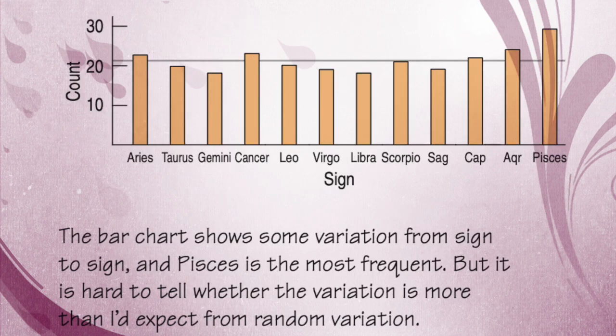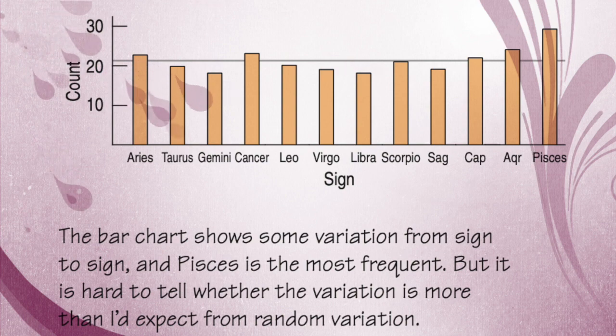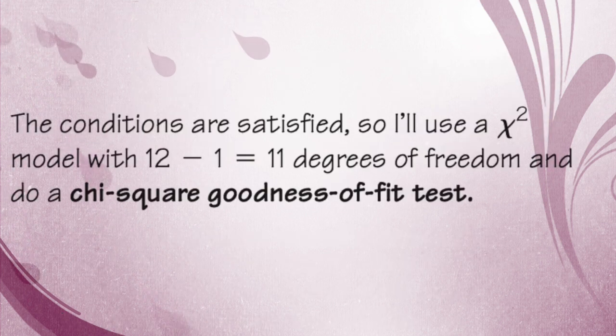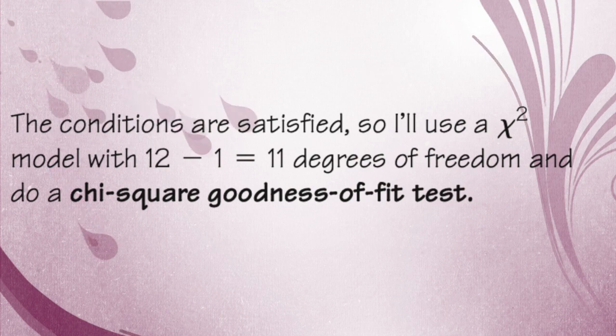If we look at a bar chart, we see some variation from sign to sign, and Pisces is definitely the most frequent, but it's hard to tell whether the variation is more than expected from random variation. Since the conditions are satisfied, I'll use a chi-squared model with 12-1 or 11 degrees of freedom, and do a chi-squared goodness of fit test.